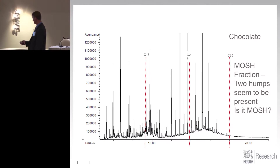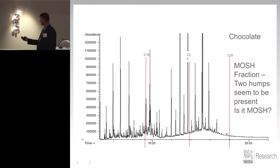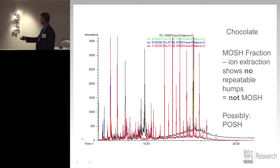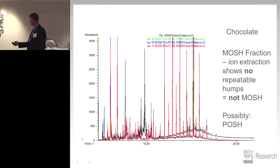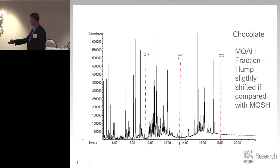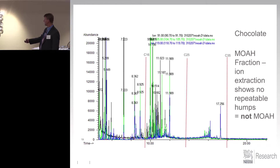When you have something like this — that's just chocolate — you have a field of peaks, and you say, well, that's kind of a hump. What's it look like when we extract the ions? The black is the TIC. The hump goes away. Who's there? It's possibly POSH — certainly not mineral oil. Look at the MOAH — once again we have something that could be a hump, but it looks pretty flat when you do the extract. So when you have no repeatable humps, you don't have any MOAH.